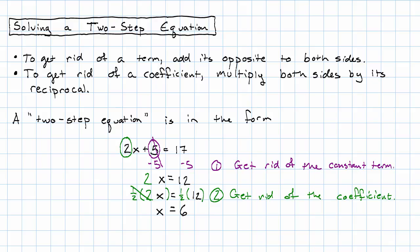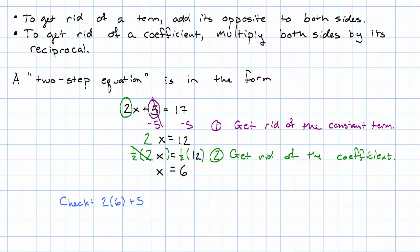Let's make sure that actually worked. Plugging in 6 for x, I get 2 times 6 plus 5, that's 12 plus 5, which really is 17.